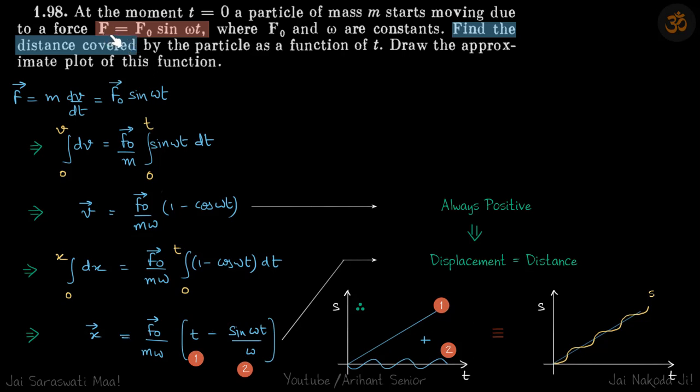We are given force as a sinusoidal function and we need to find the distance covered by the particle as a function of time. We'll write force in the form of dv/dt, then integrate it once to get velocity, and integrate it again to get displacement as a function of time.